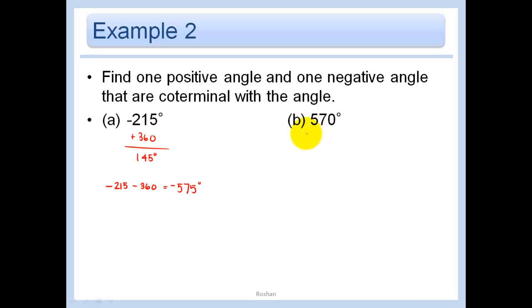On this one, we could just subtract 360, and we get 210 degrees. We could add 360 to 570, or we could just subtract off another 360, and get negative 150 degrees. There's not one right answer for any of this stuff. You just keep adding 360s or keep subtracting 360s, and those are coterminal.